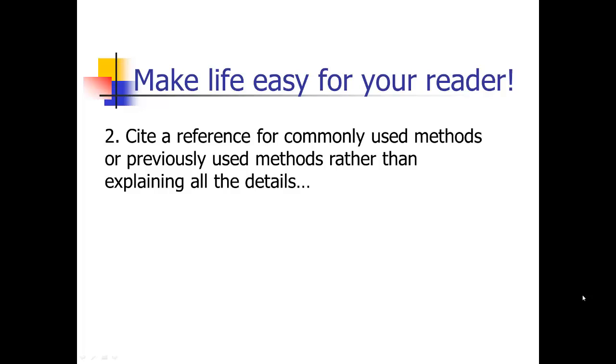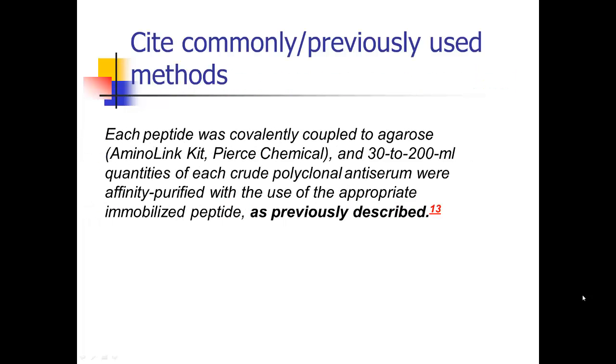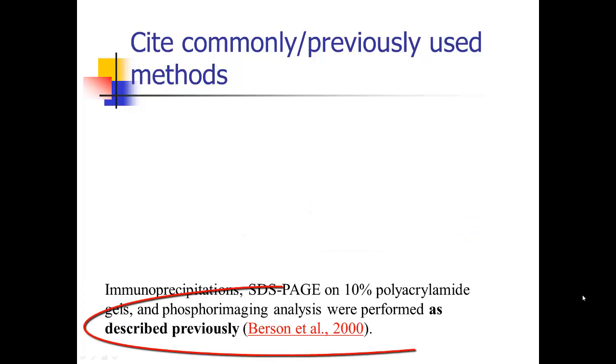Another way to make life easy for your readers is for commonly used methods, things that you've already reported about. Rather than going into all the details, again, you can refer the reader to those references. Especially if it's not really critical and you don't need to kind of walk the reader through it. So here's an 'as previously described' and then give a reference. So rather than having to go through details of things that a lot of people are going to know in your discipline, you can just refer them to a reference to save space.